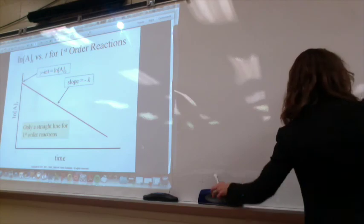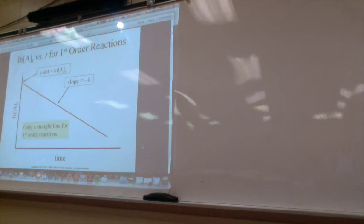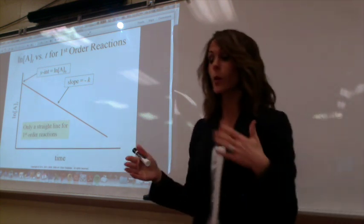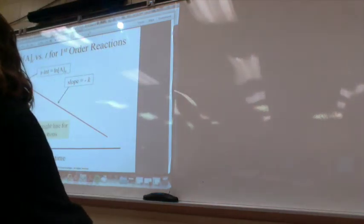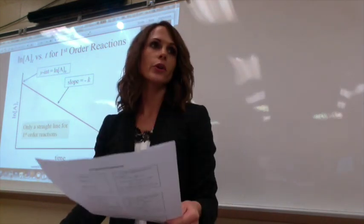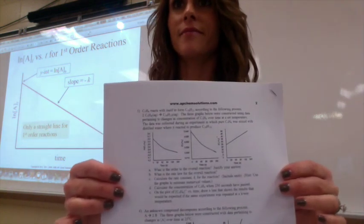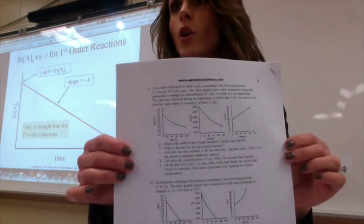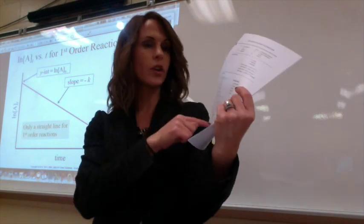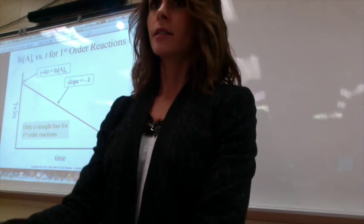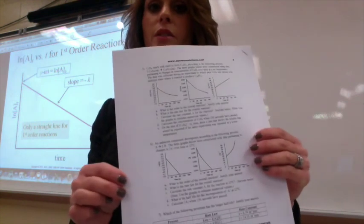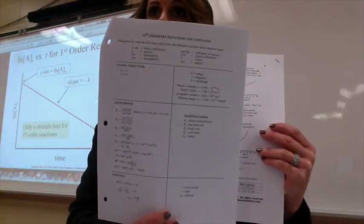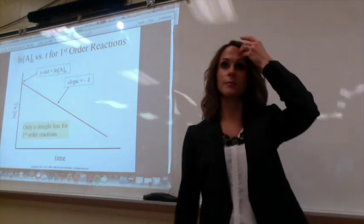For example, if one graph curved and another was straight, that straight one would be first order. You're going to see that on your homework tonight — look at question five. For question five, the third graph is straight with y-axis of one-over-concentration, so you go back to your equation sheet and see that means second order. For question six, the first graph is straight with axes ln[A] versus time, so that's first order. If it's zero order, the y-axis is just concentration versus time.